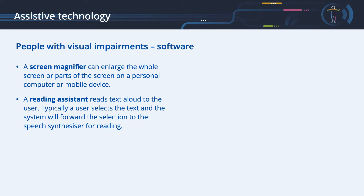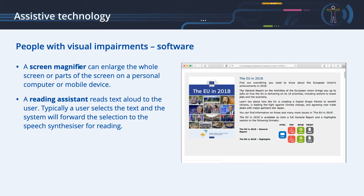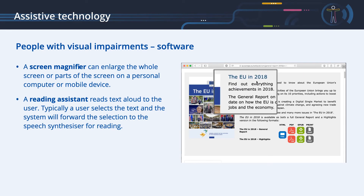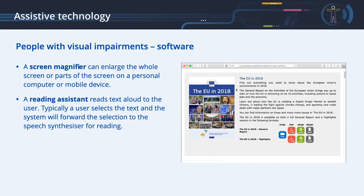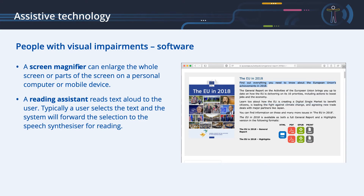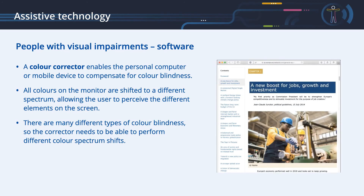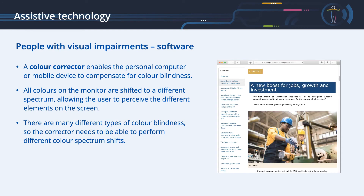Assistive technology for people with visual impairments — Software. There are also software solutions for this target group. A screen magnifier can enlarge the whole screen or parts of the screen on a personal computer or mobile device. A reading assistant reads text aloud to the user — typically, a user selects the text and the system forwards the selection to the speech synthesizer for reading. A color corrector enables the personal computer or mobile device to compensate for color blindness. All colors on the monitor are shifted to a different spectrum, allowing the user to perceive the different elements on the screen. There are many different types of color blindness, so the corrector needs to perform different color spectrum shifts.